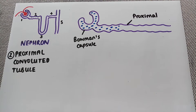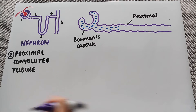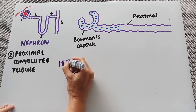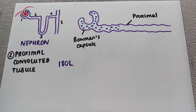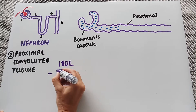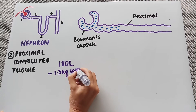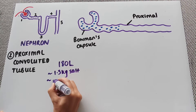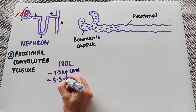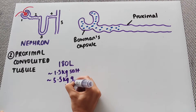This is actually a very large volume of glomerular filtrate that's pushed out from the glomerulus. On average, it's about 180 litres per day, which is an enormous amount of filtrate produced. Of that, there is about 1.5 kilograms of salt, and there is also about 5.5 kilograms of glucose.